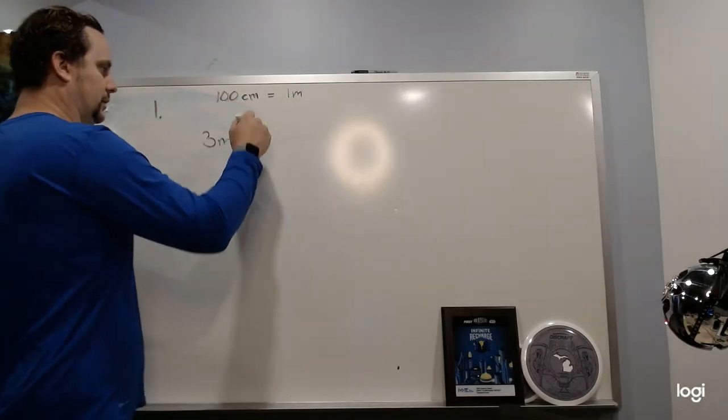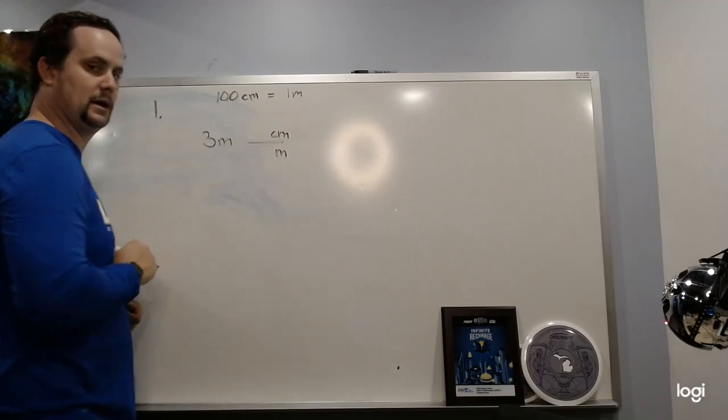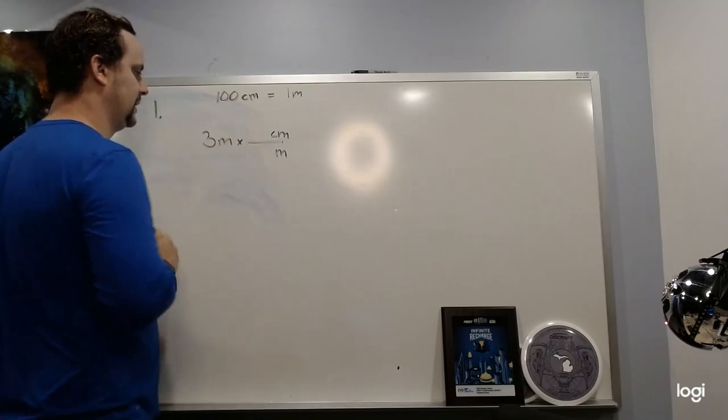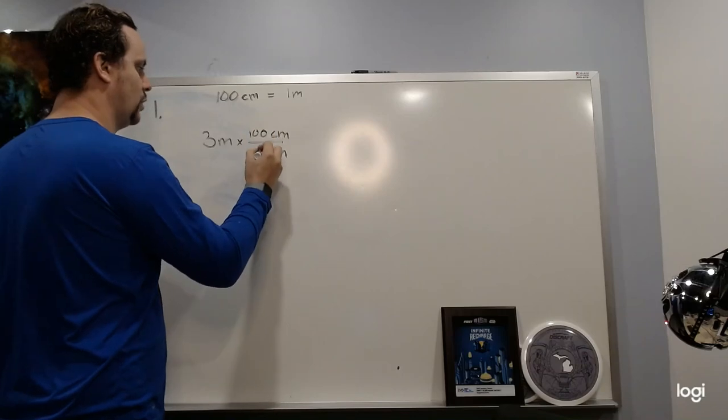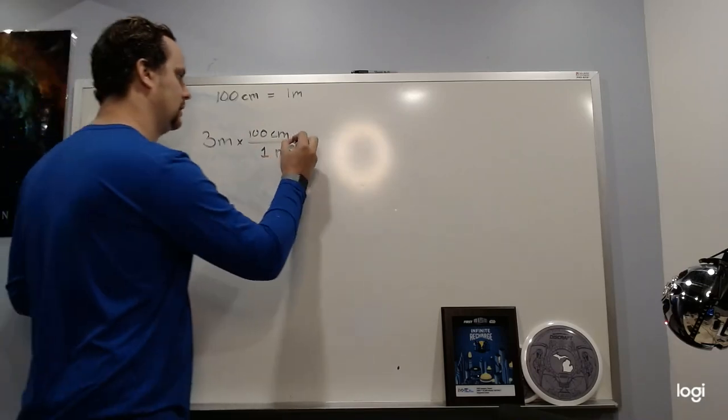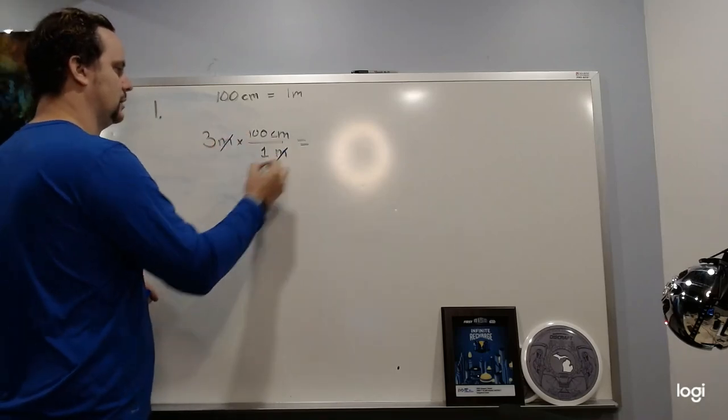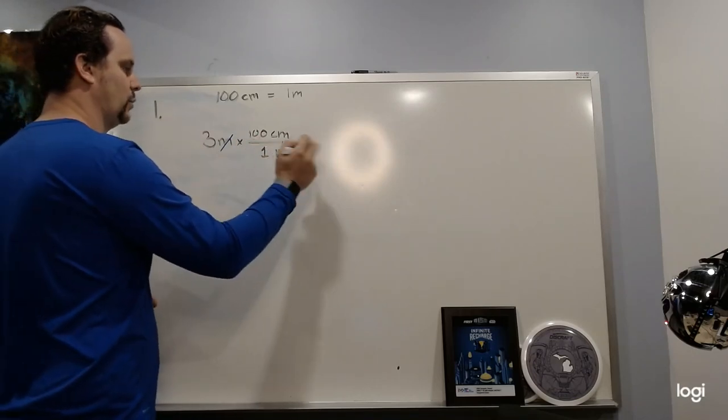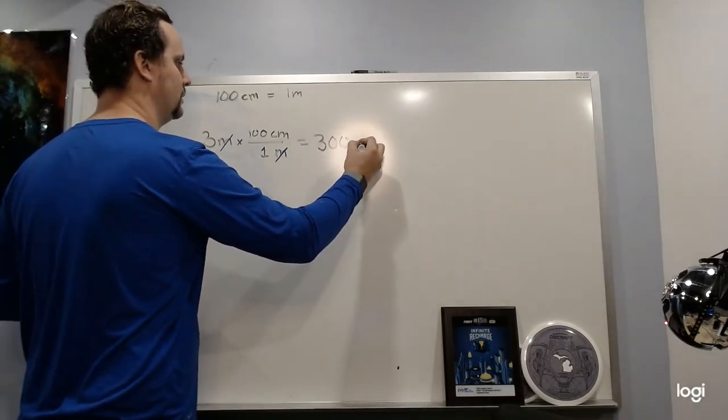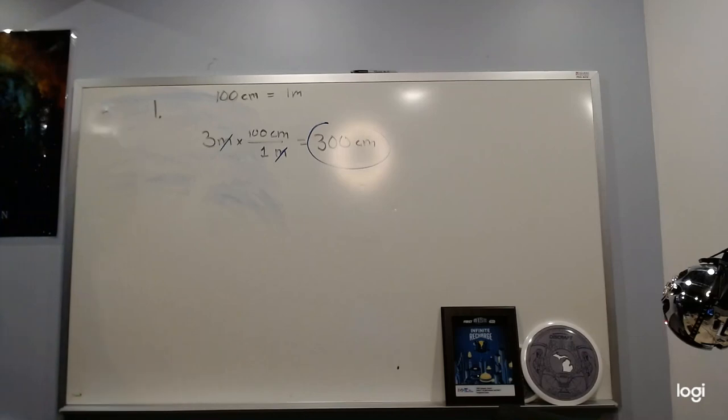So I want to cancel out meters and I want to end up with centimeters. So I'm going to multiply by 100 centimeters to every one meter. Now that's going to do the conversion to get me to centimeters. That's what I wanted. I can go here. I will end up with those two canceling out, and I got three times 100, which is 300 centimeters. All right, that is our answer.